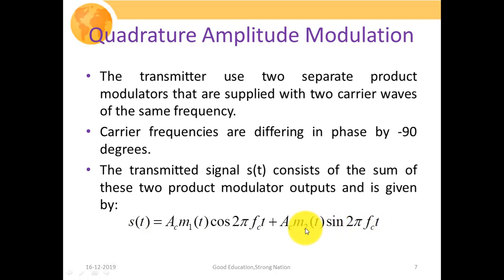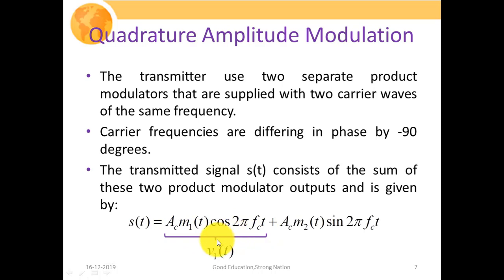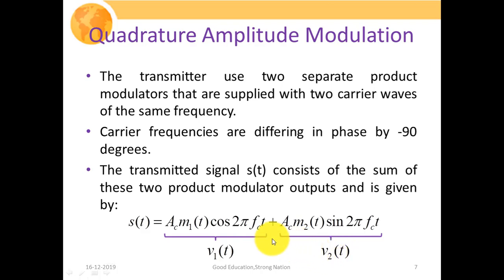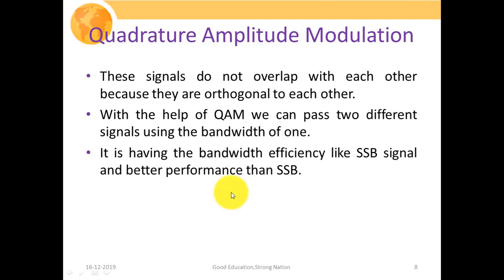So cos(2πFct − π/2) turns out to be sin(2πFct). This is the generalized expression of the QAM signal, also called the quadrature carrier multiplex signal. The term Ac·M1(t)·cos(2πFct) represents the composite signal V1(t), and Ac·M2(t)·sin(2πFct) represents the composite signal V2(t). Adding V1(t) and V2(t) gives the complete output signal S(t).